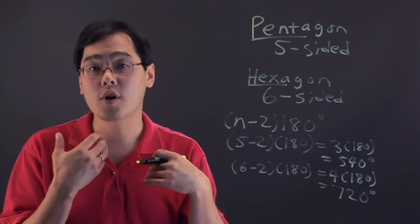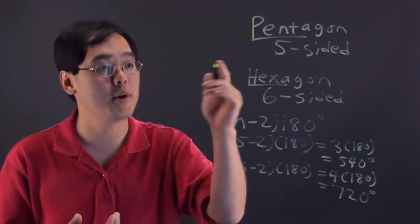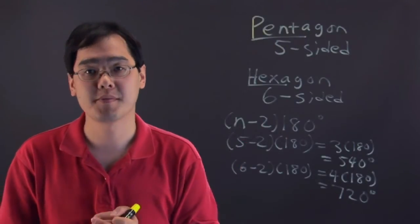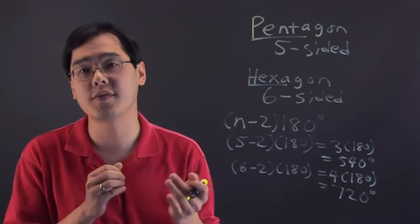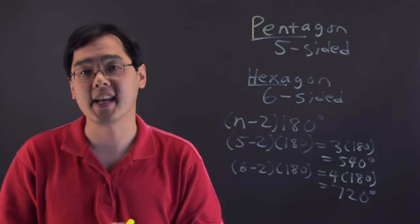So basically where a pentagon and hexagon will differ will be the number of sides and the total number of degrees between the two shapes. I'm Jimmy Chang and those are the differences between a pentagon and a hexagon.